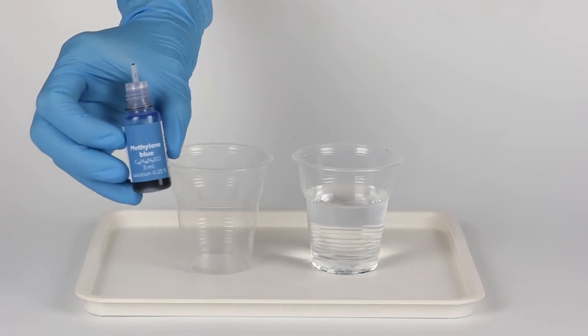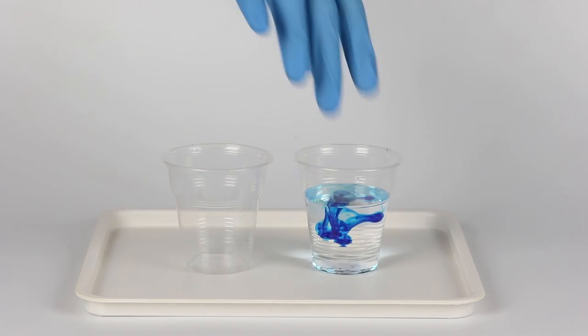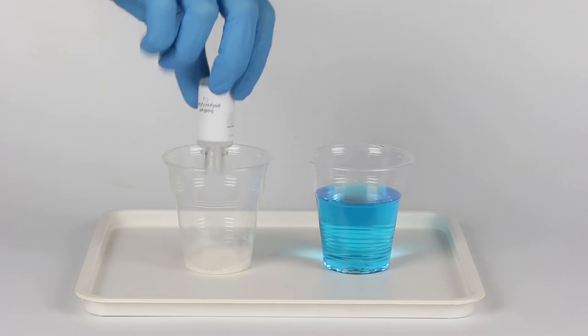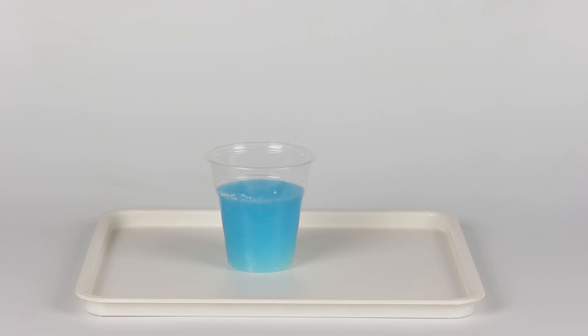You can also make blue instant snow. Just add five drops of methylene blue solution to the water at the beginning. Then repeat the steps of the experiment to create blue snow.